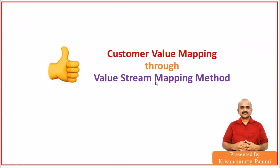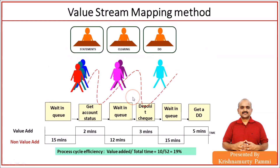The first lean principle: how did we achieve customer value mapping through value stream mapping method? Value stream mapping is about understanding, through the customer's eyes, what value they are perceiving. For example, going back 15 years — to get a demand draft at a bank, you used to wait 15 minutes in line, get account status verified, wait again, deposit the cheque, wait again, and then receive the demand draft.